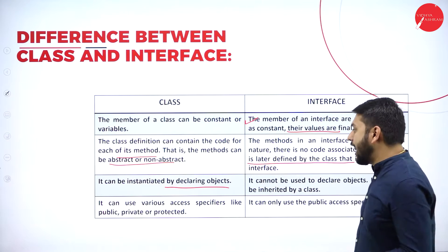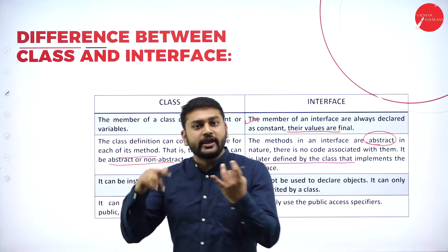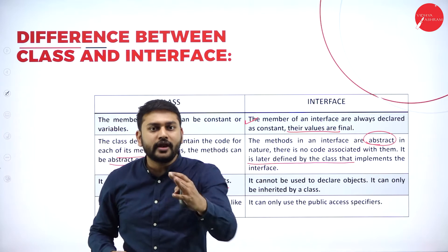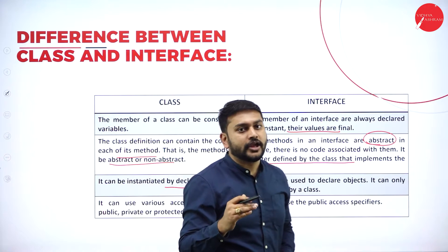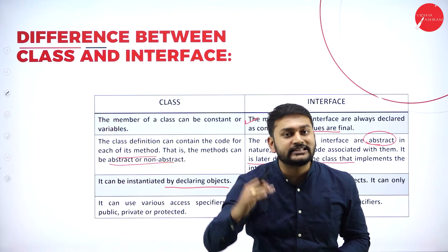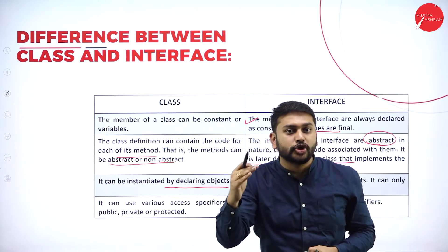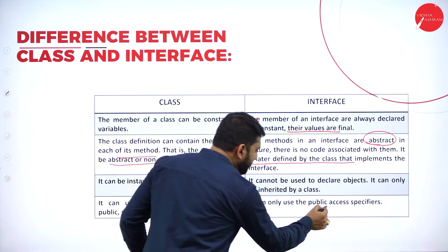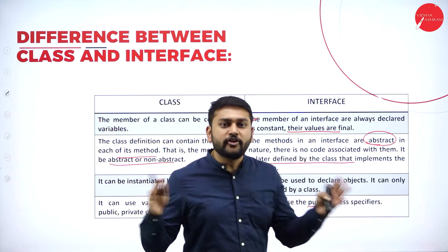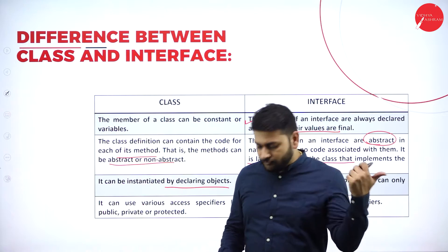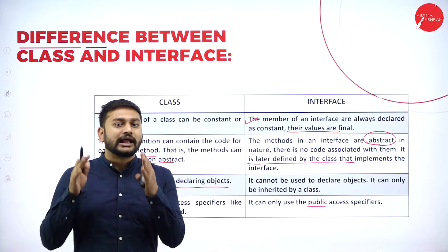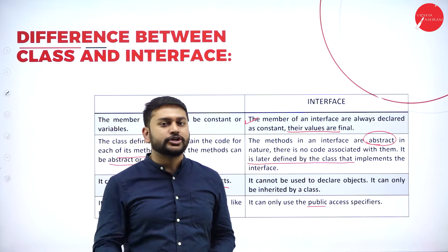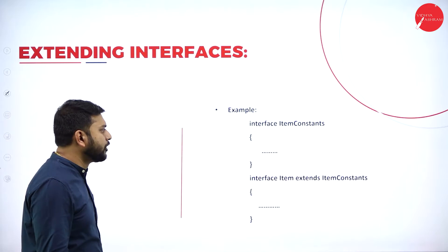Moving on to access specifiers: in a class you can use public, private, or protected. Public means you can access variables or methods anywhere in the program; private means only within the package; protected means within the package or in a derived class. But for interfaces, you can only use the public access specifier — you cannot use any other access specifier.